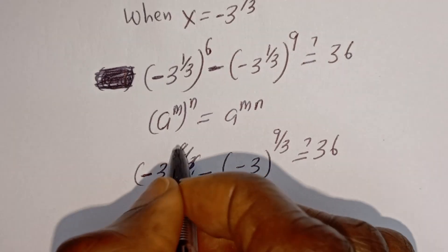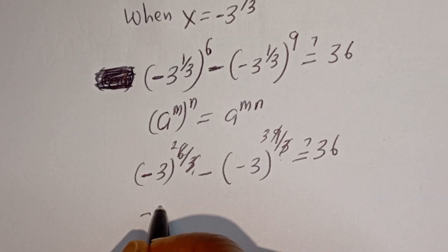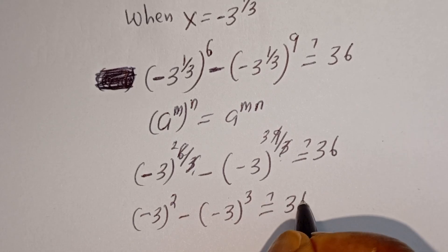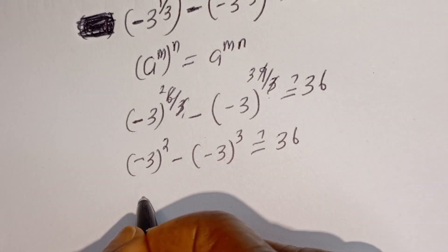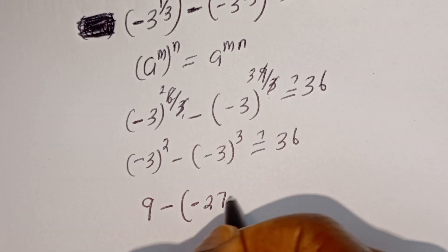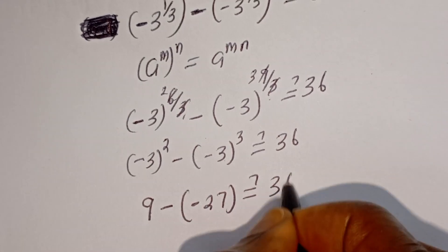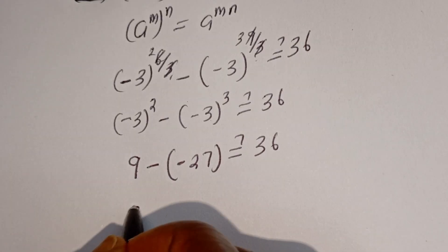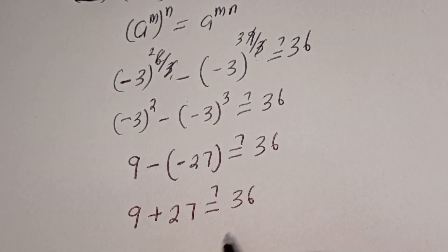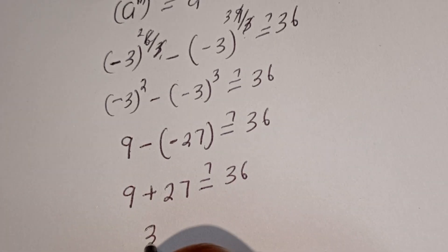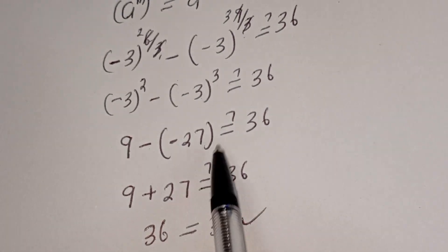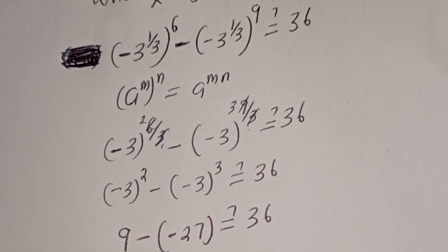Simplifying: minus 3 to the power of 2, minus minus 3 to the power of 3, equals 9 minus minus 27, equals 9 plus 27, equals 36. This equals 36, which is true. I hope you enjoyed the video. Thank you for watching. Please don't forget to like, share, comment, and subscribe to my channel. Bye.